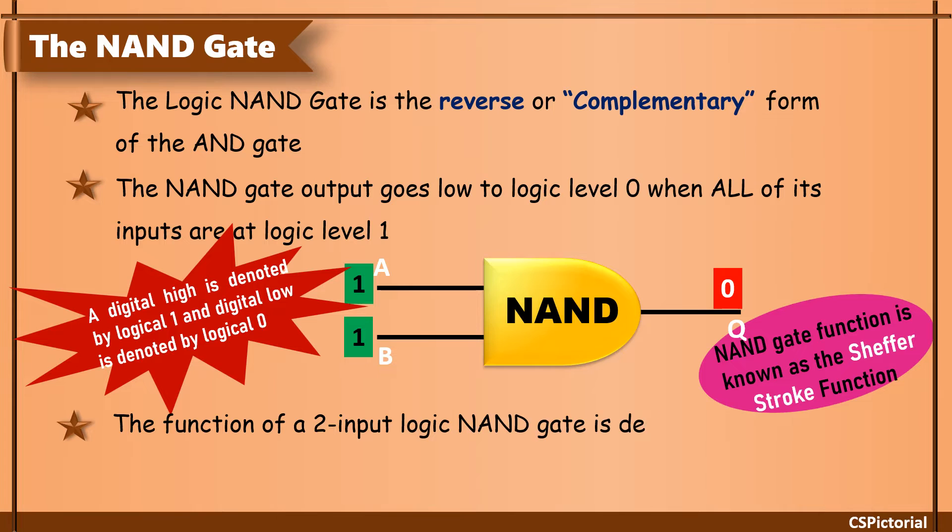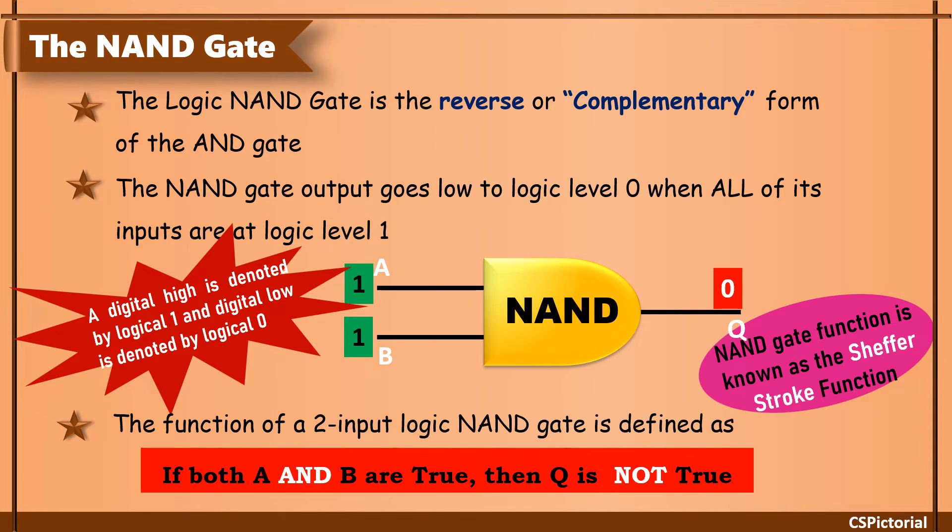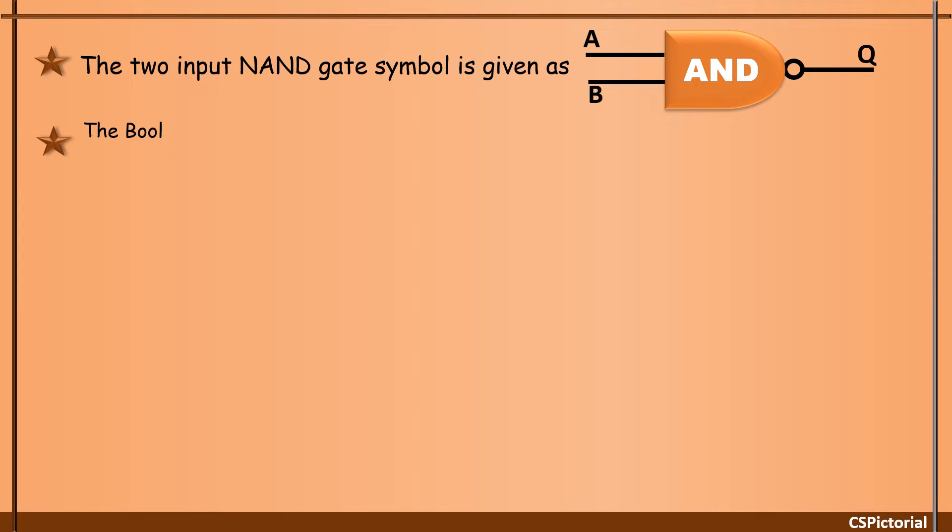So, in NAND gate if both A and B are true then Q is not true. 2 input NAND gate symbol looks this way with a 2 input AND gate having an inverting circle or inverting bubble at the output. NAND operation is denoted by a dot as Q equal to A dot B and an overline to signify the negation.